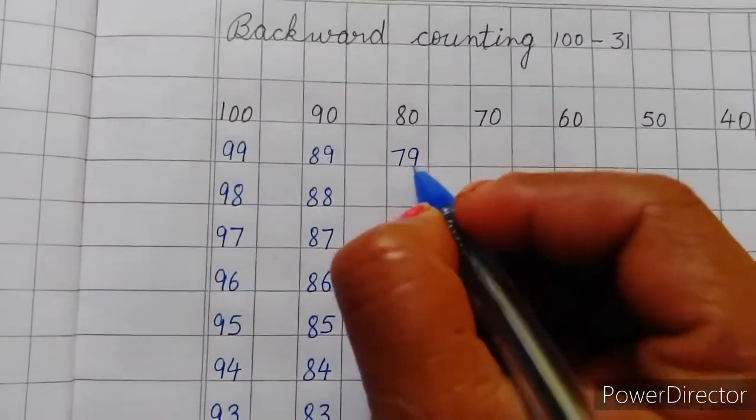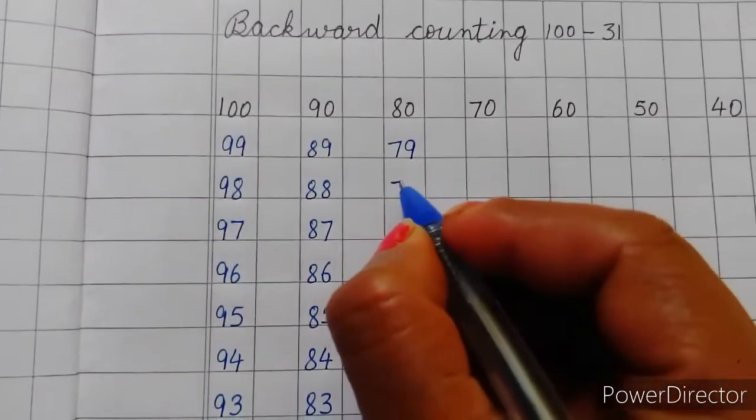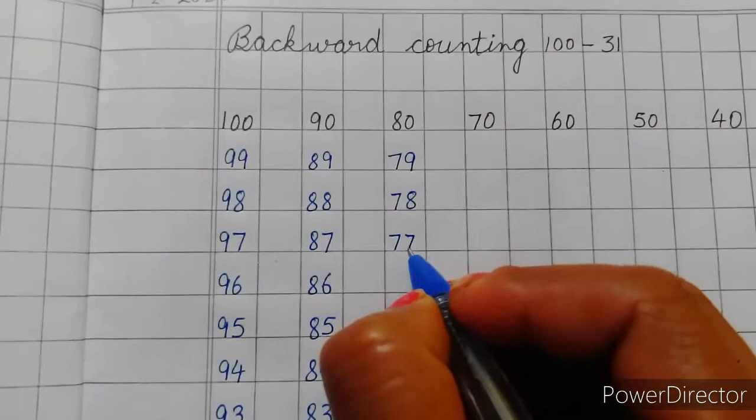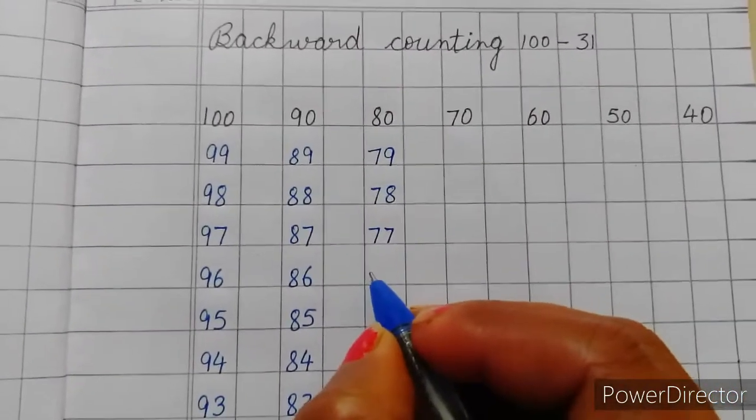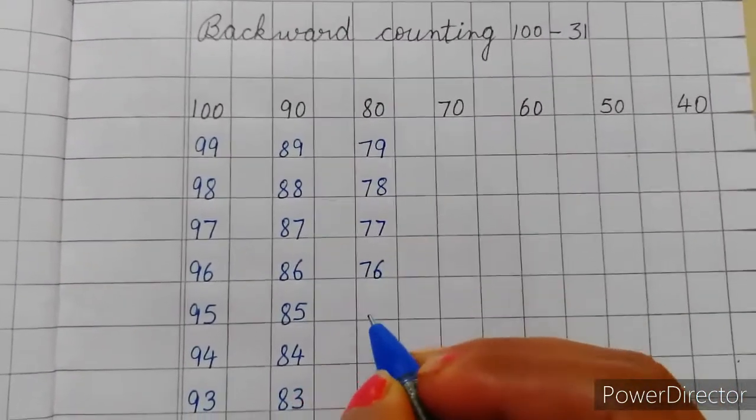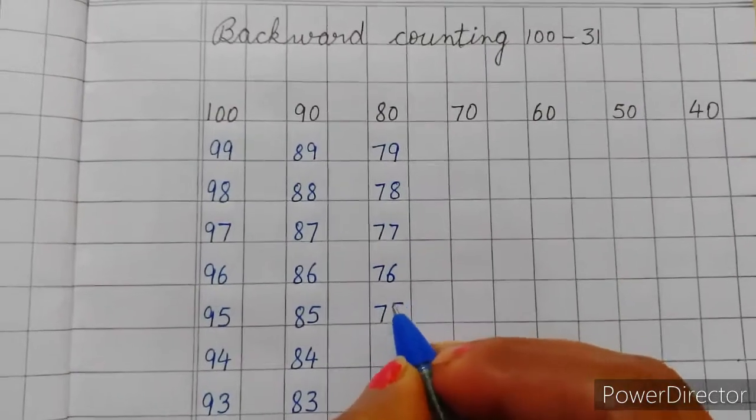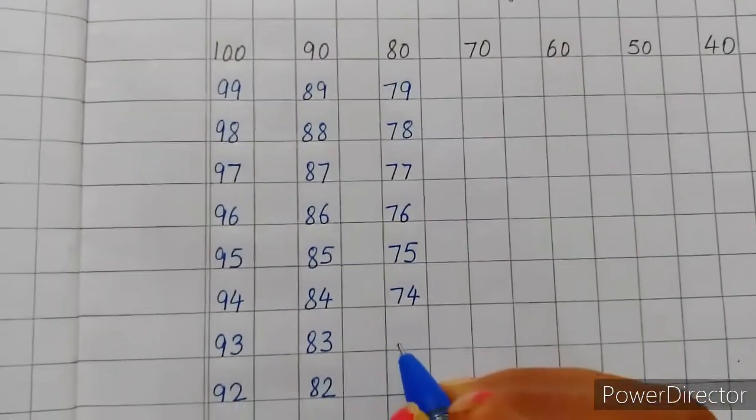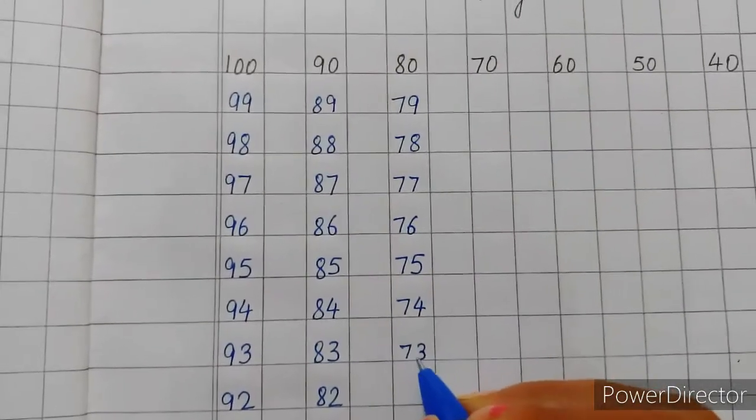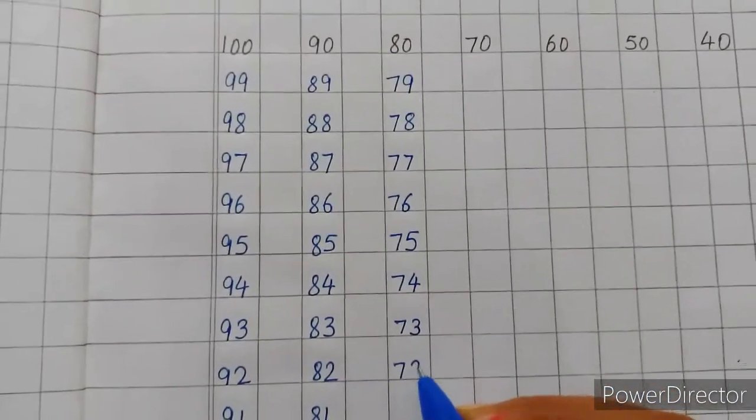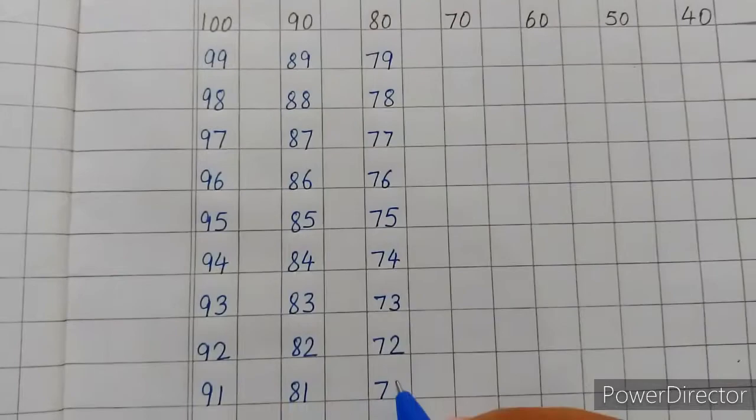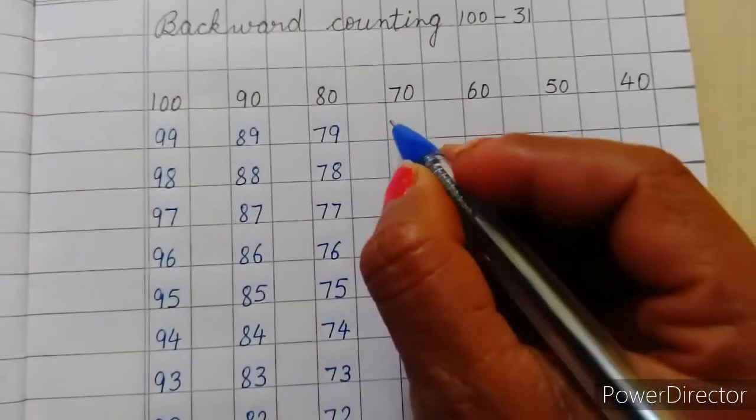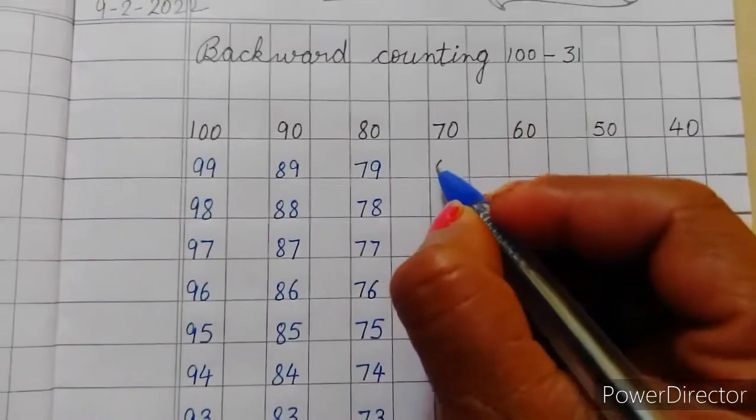79, 79. 7, 8, 78, 77, 76, 76, 75, 75, 75, 74, 74, 73, 73, 72, 72, 71, 71. Now 7, 0, 70.